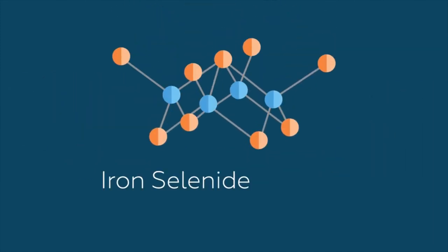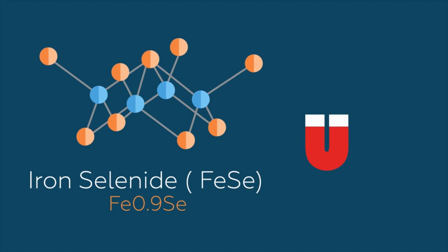One such compound is iron selenide, FeSe. It forms close to Fe0.9Se. This non-stoichiometry gives rise to magnetic properties. Iron selenide is a low-temperature superconductor.